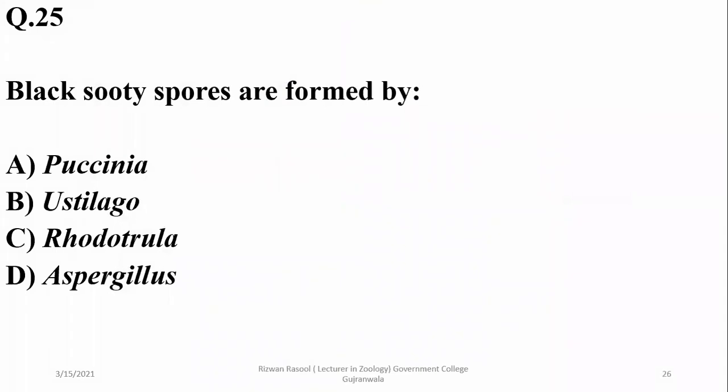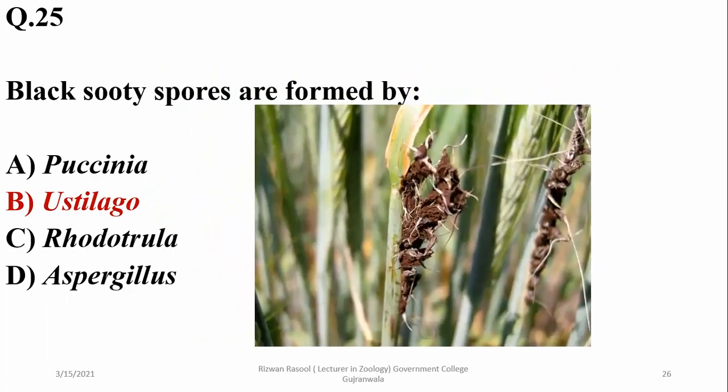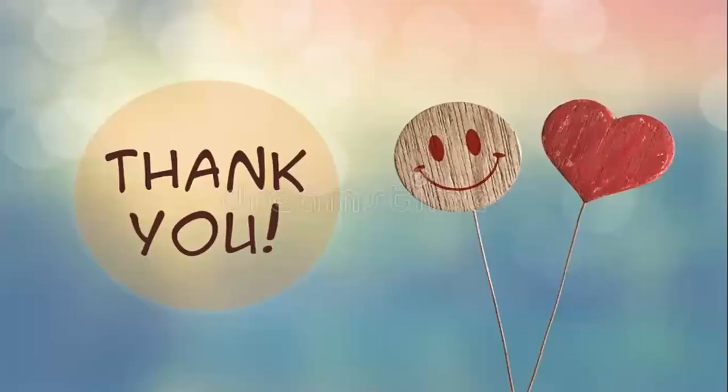And black sooty spores are formed by Ustilago species or smut species. It was all about fungi or MCQs on fungi. Thank you so much.